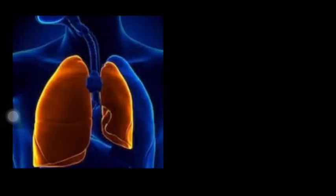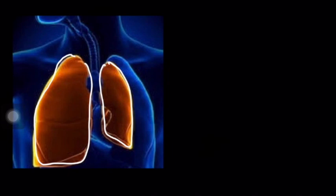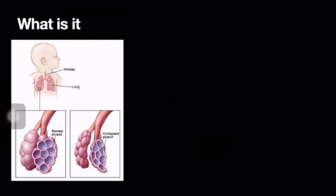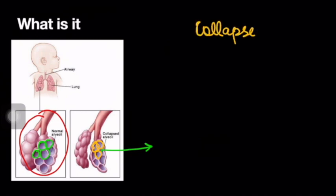First and foremost, what is collapse? In the given image you can see the right lung parenchyma and the left lung parenchyma. What is striking? The left lung parenchyma appears reduced in volume. So this is basically the definition of collapse. In the diagrammatic representation of alveoli, normally the alveoli are air-filled and appear distended. In a collapsed alveoli, there is decrease in volume. So basically collapse is loss of lung volume, indirectly referring to loss of aeration.